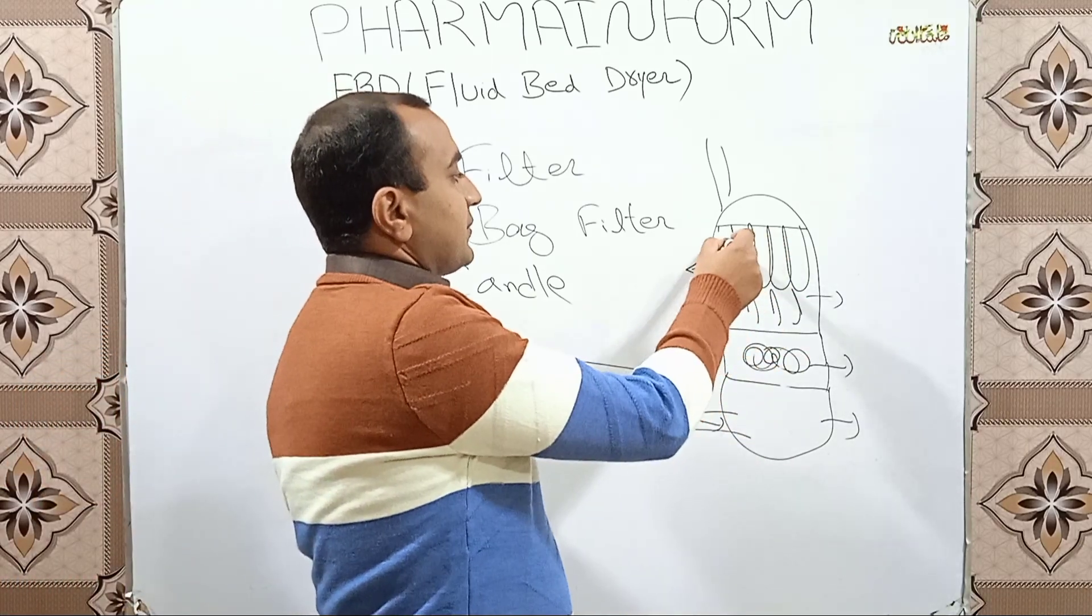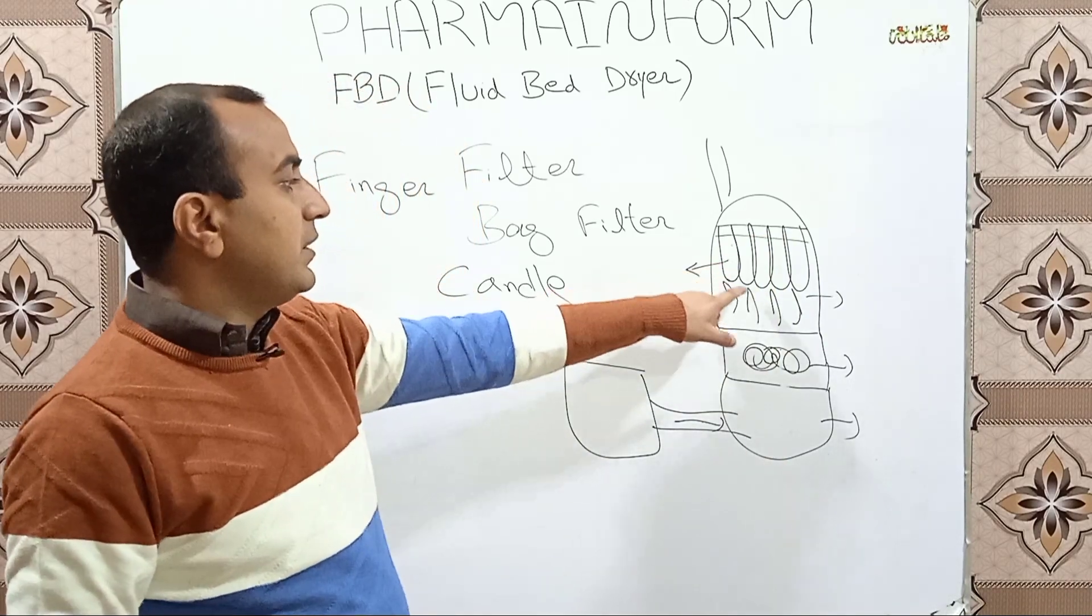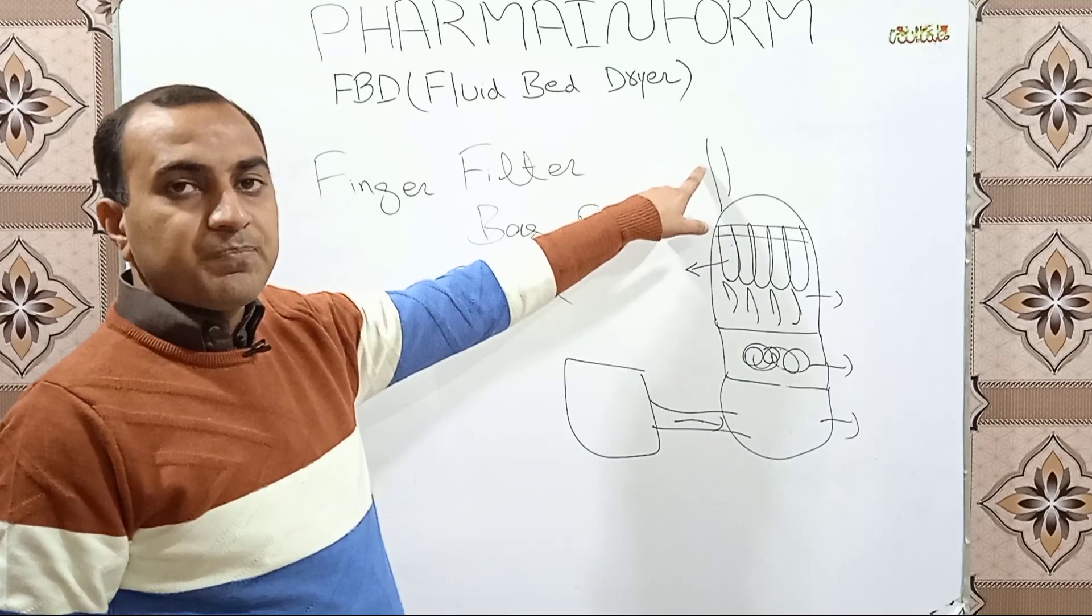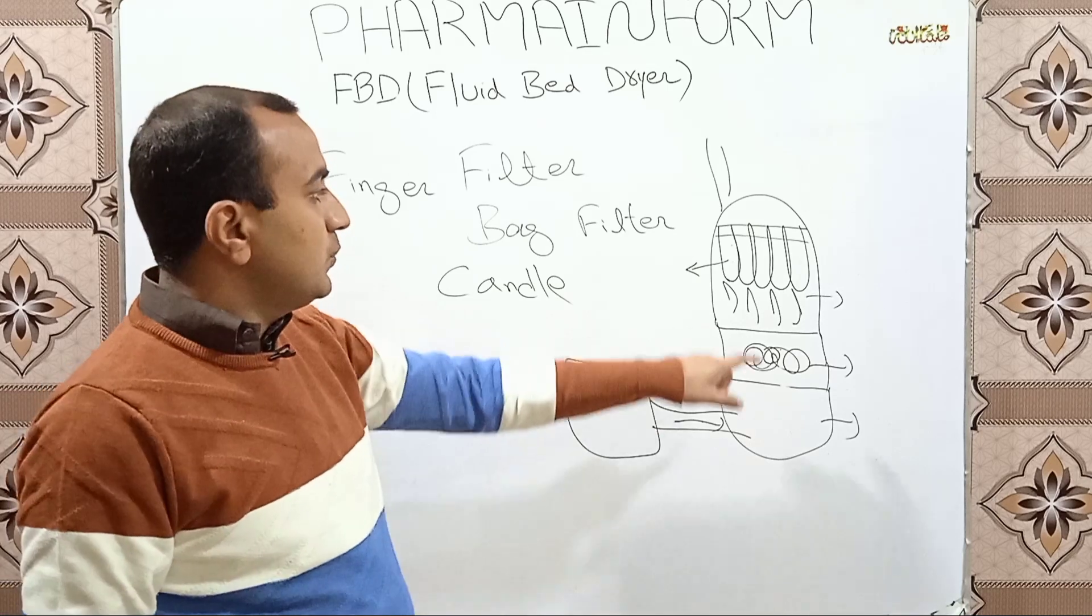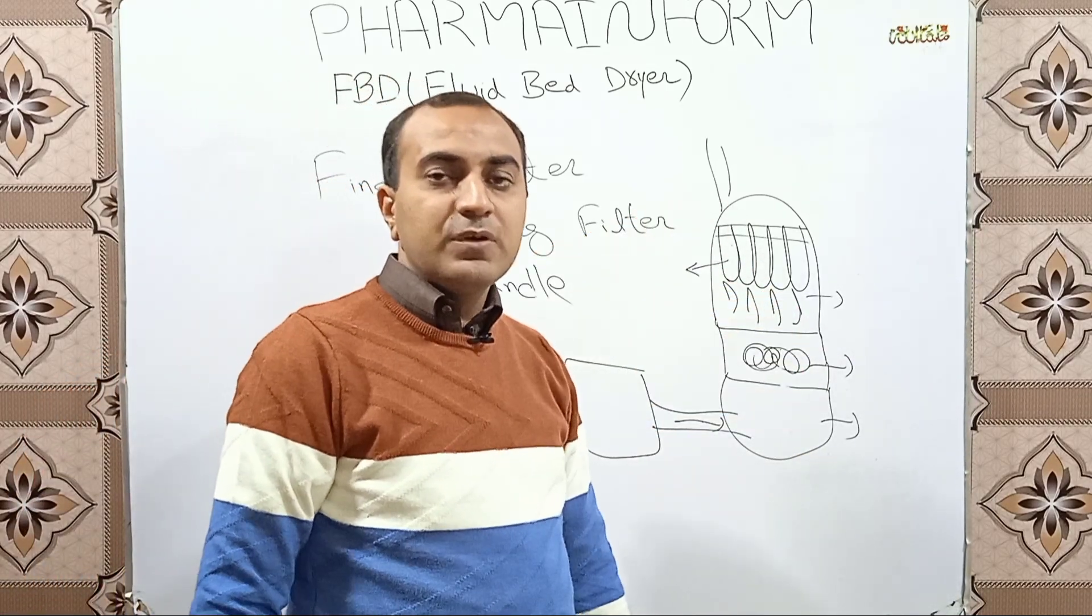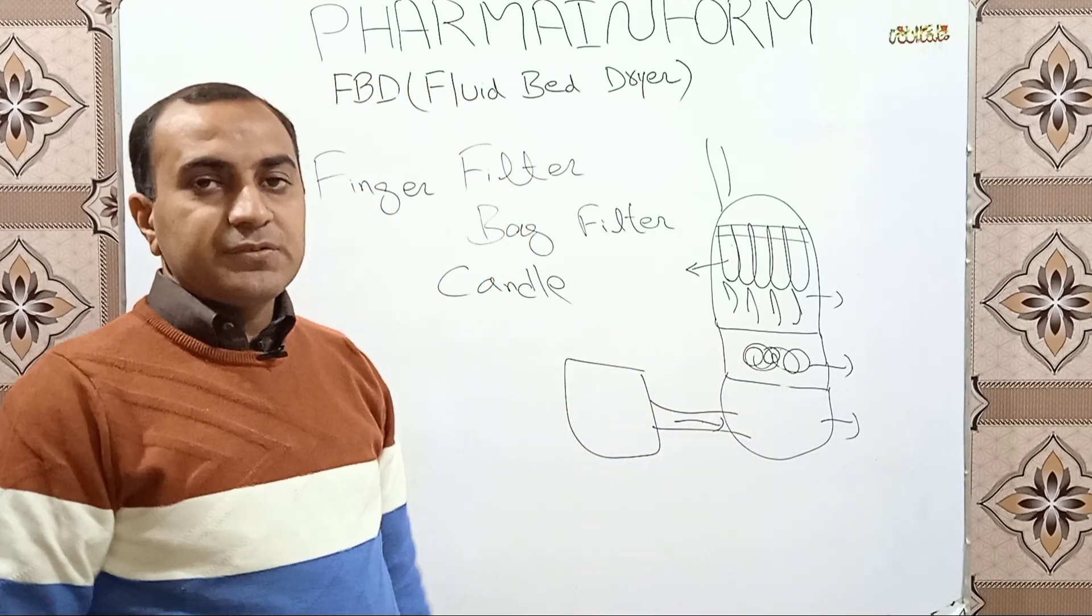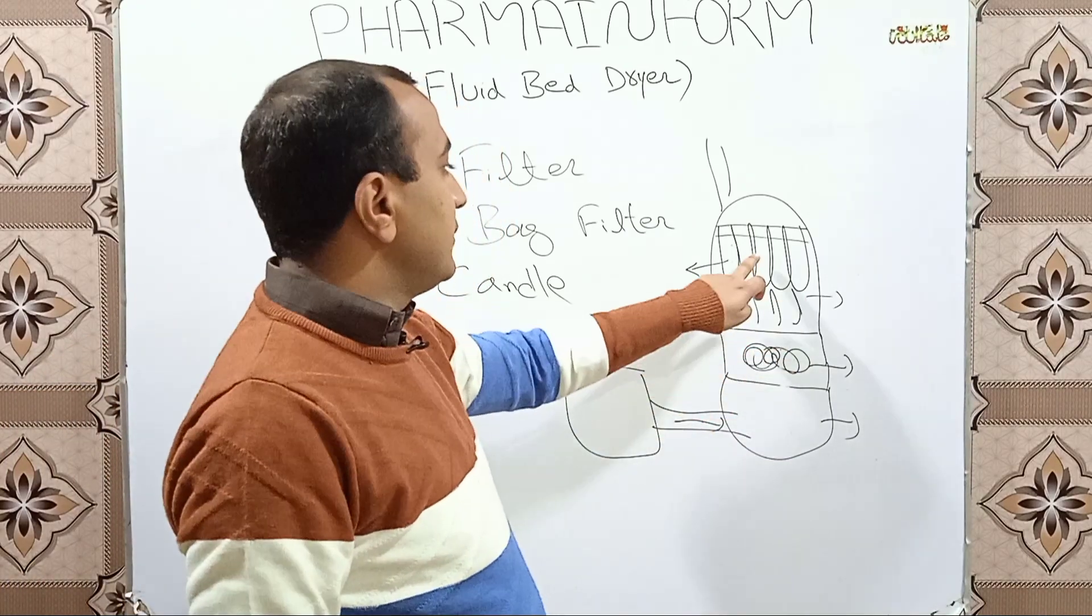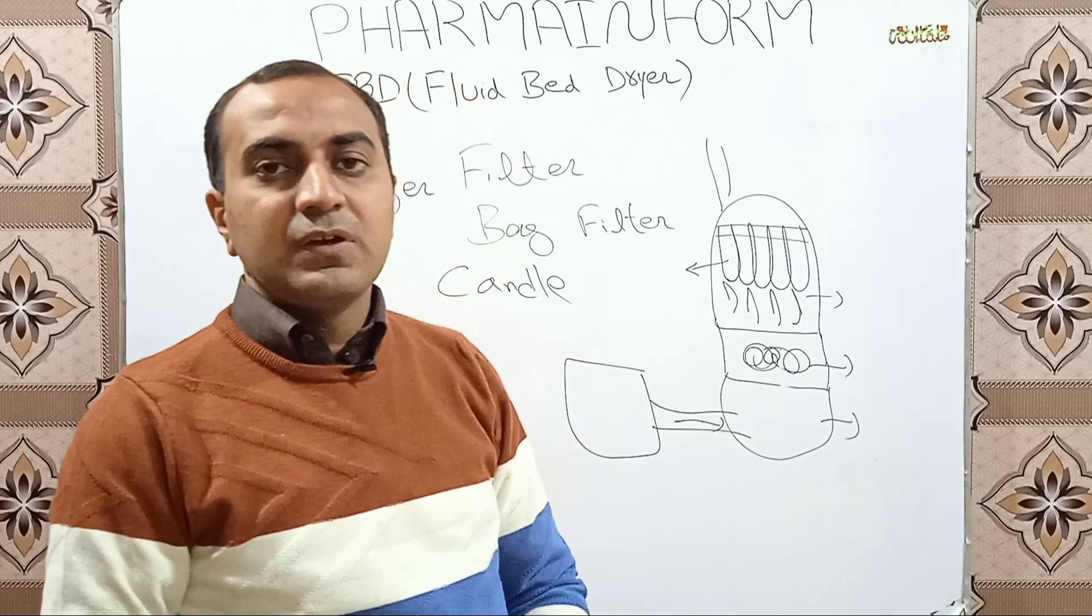So we have installed here the filters. These filters prevent the loss of our product through this return duct. These filters only allow the air to pass through and prevent the passage of granules or powders, so our product is dried and collected into the product trolley.